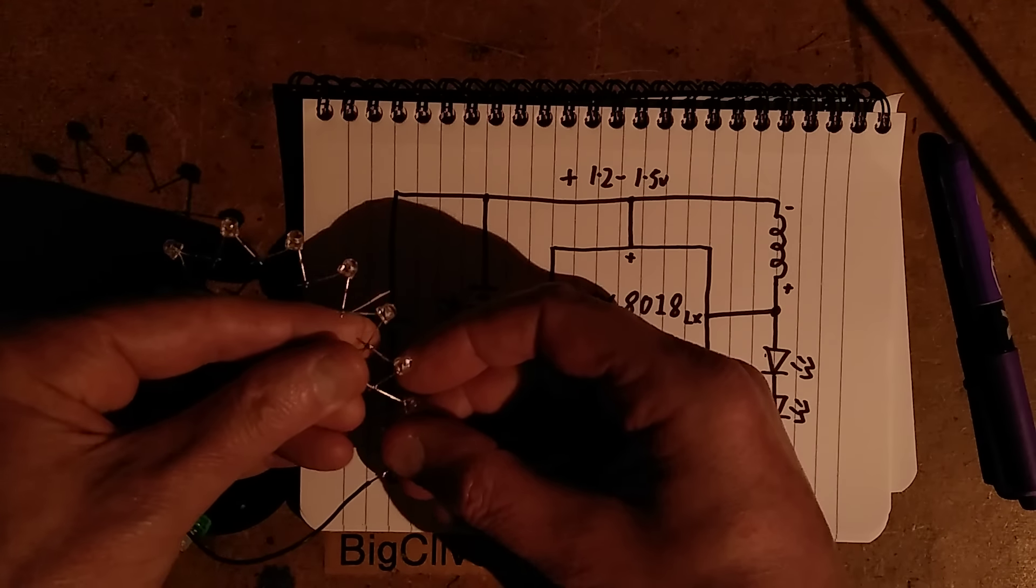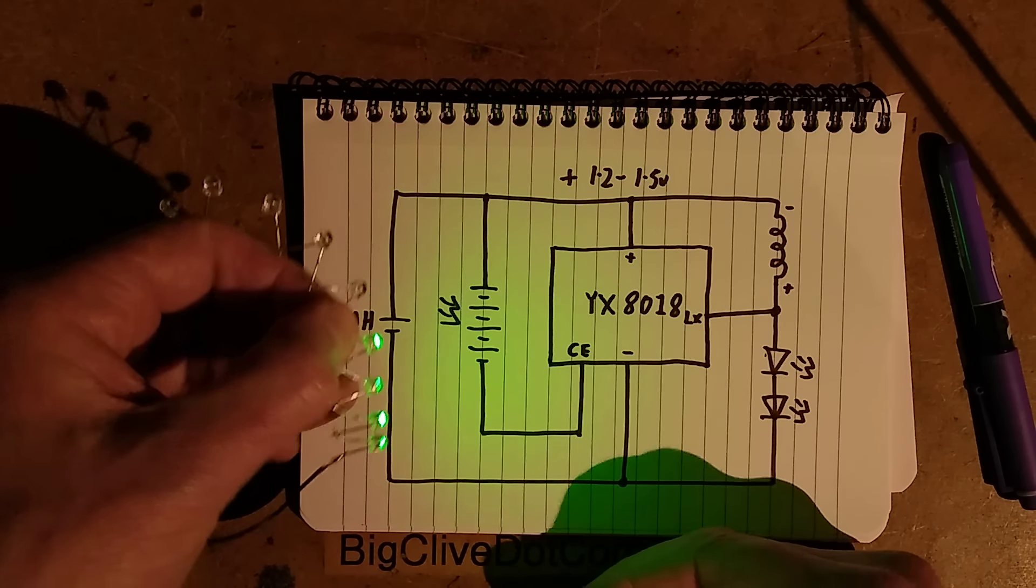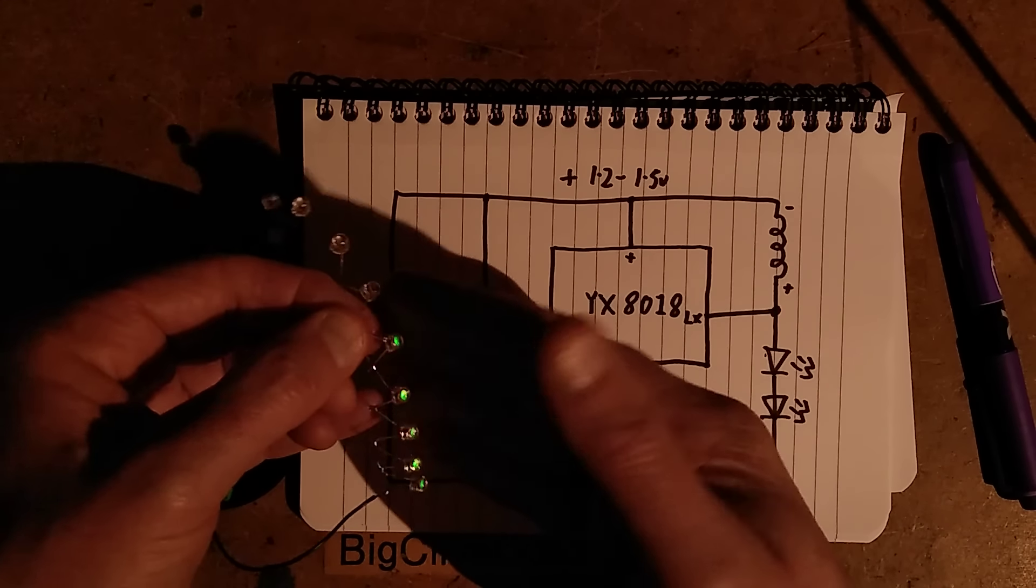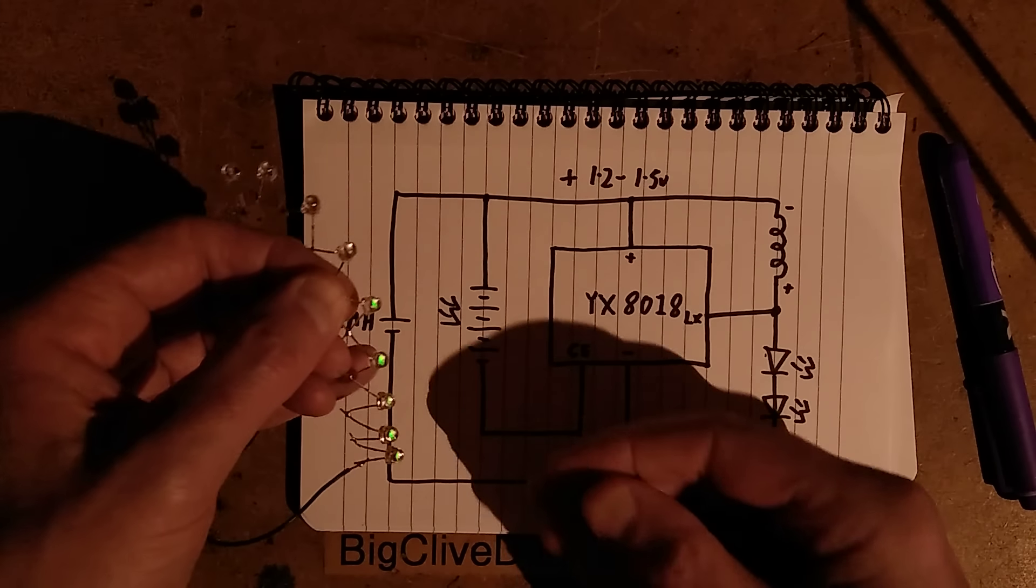When I get to four, it is notably dimmer, but we've still got four LEDs lit. And by the time I get to five, they're just barely lit. They're just glowing. It won't even light the paper.